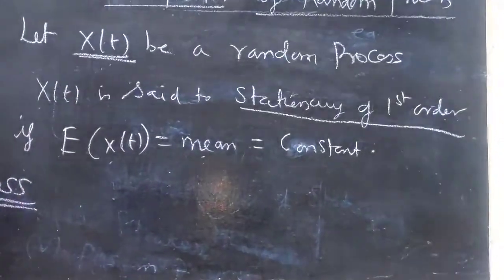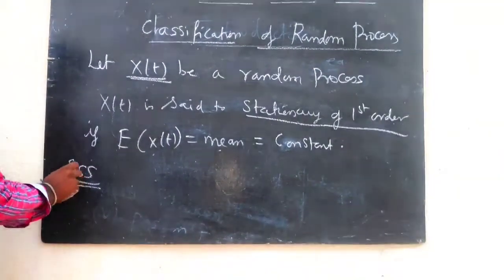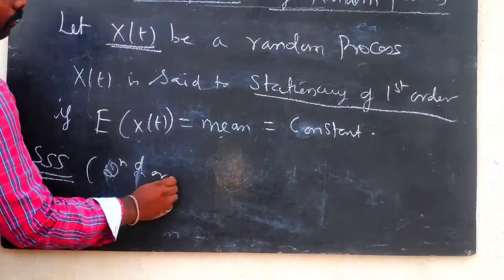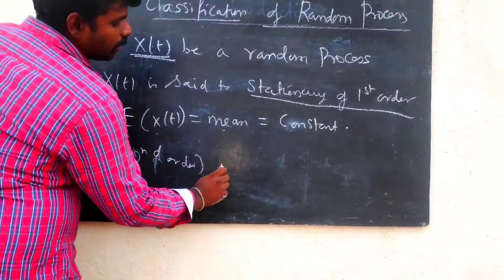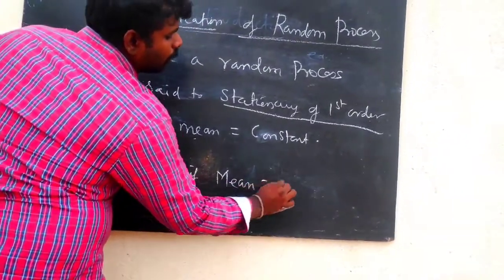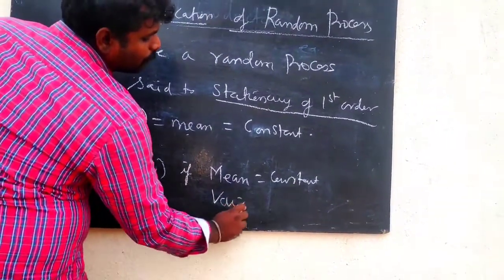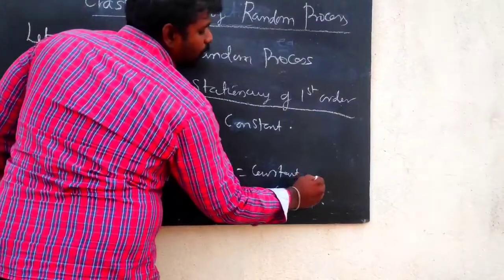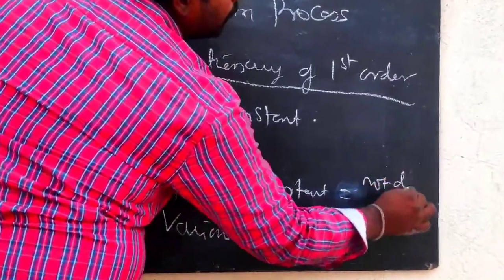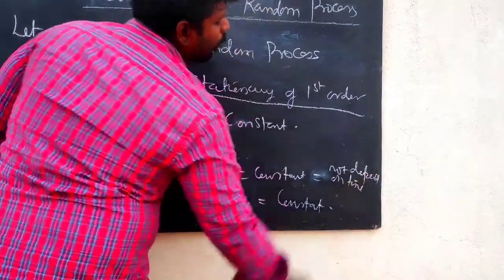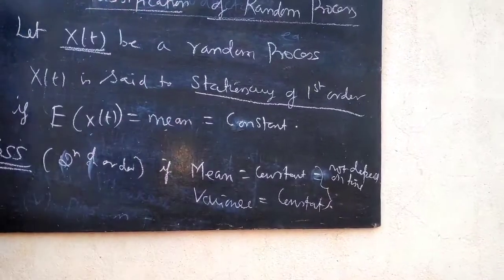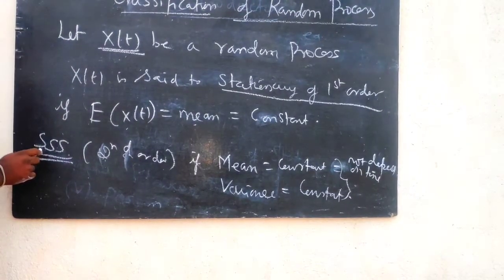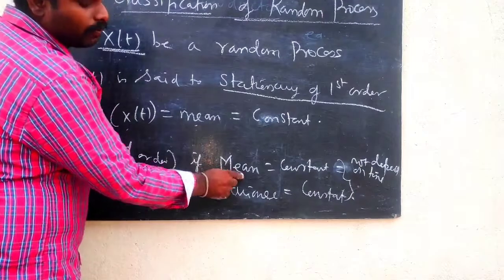Strict sense stationary means stationary of second order. For stationary of second order, the condition is: the mean must be constant and the variance must also be constant — both must not depend upon time. These are the conditions for strict sense stationary.